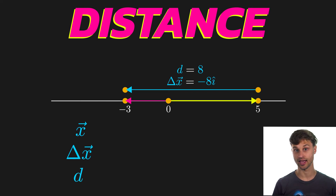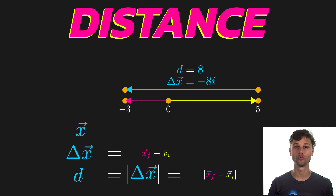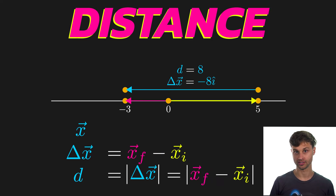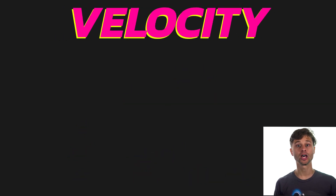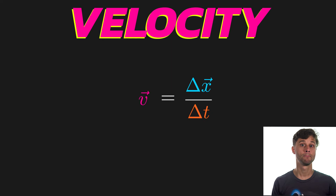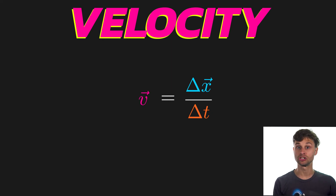So: position is a vector, displacement is also a vector, and distance is a scalar — the magnitude of the displacement vector. Position is an absolute measurement, whereas displacement and distance are relative measurements. Now onto velocity. Velocity is simply the displacement per change in time, or equivalently the change in position over change in time.